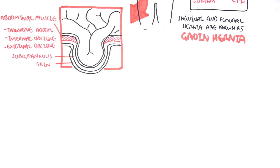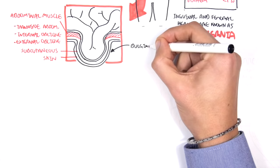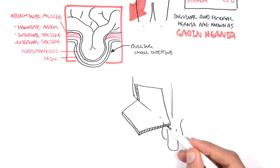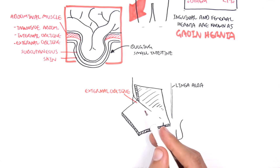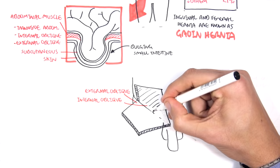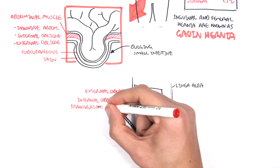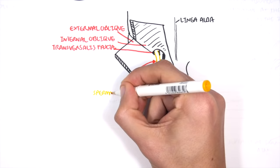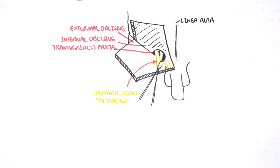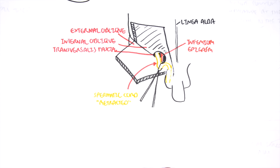An inguinal hernia involves the bulging of the small intestine through the abdominal wall. Looking at this from an anterior view of the groin area, we can see the linea alba, the abdominal muscles, and from the outside the external oblique which has been opened up, the internal oblique, and below that the transversalis abdominis fascia. Here we are pulling on the spermatic cord — it's been retracted — and we can see next to it an important artery landmark: the inferior epigastric artery. Also visible, medial to the inferior epigastric artery, is the conjoint tendon.